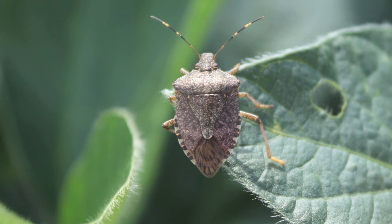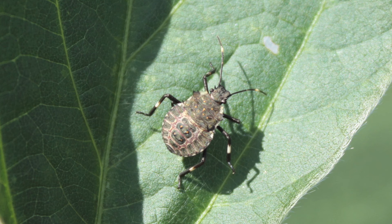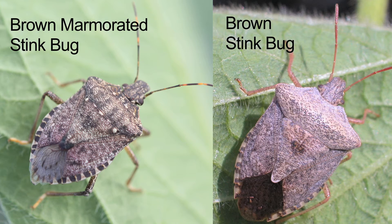A new player on the block is the brown marmorated stink bug, an invasive insect that now has a pretty strong foothold in parts of Tennessee. It does its damage by feeding on seed, very similar to the other stink bugs. As you can see in the image, it actually resembles the brown stink bug quite a bit, but the adult stage can usually be distinguished because it has white stripes on its antennae and sometimes its legs.